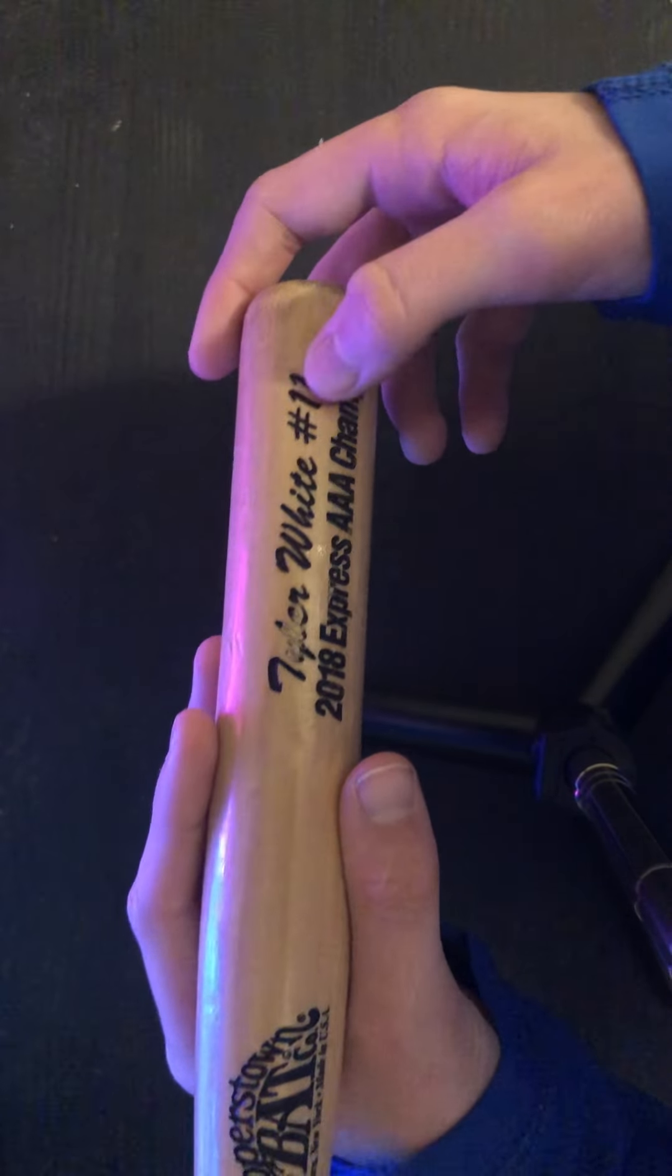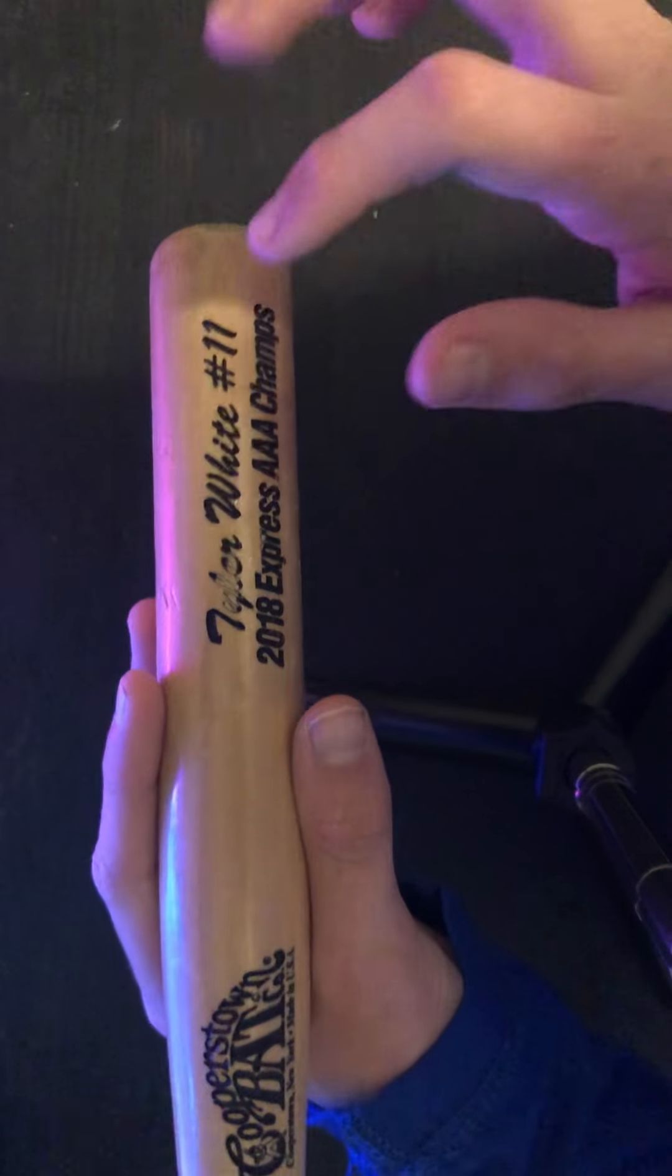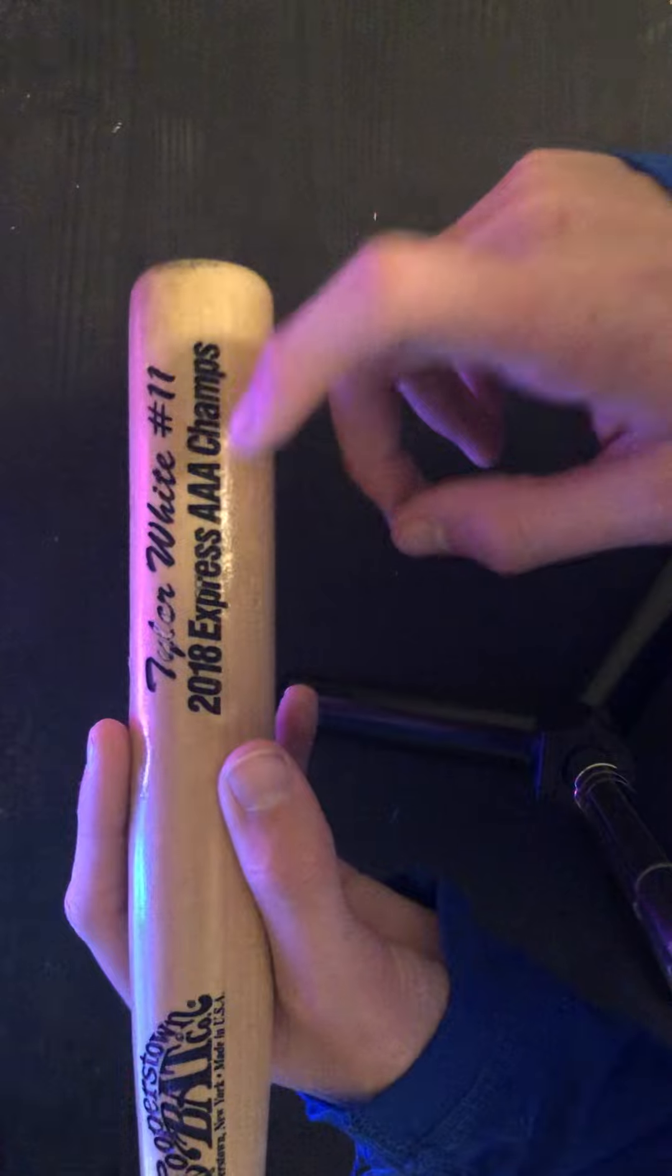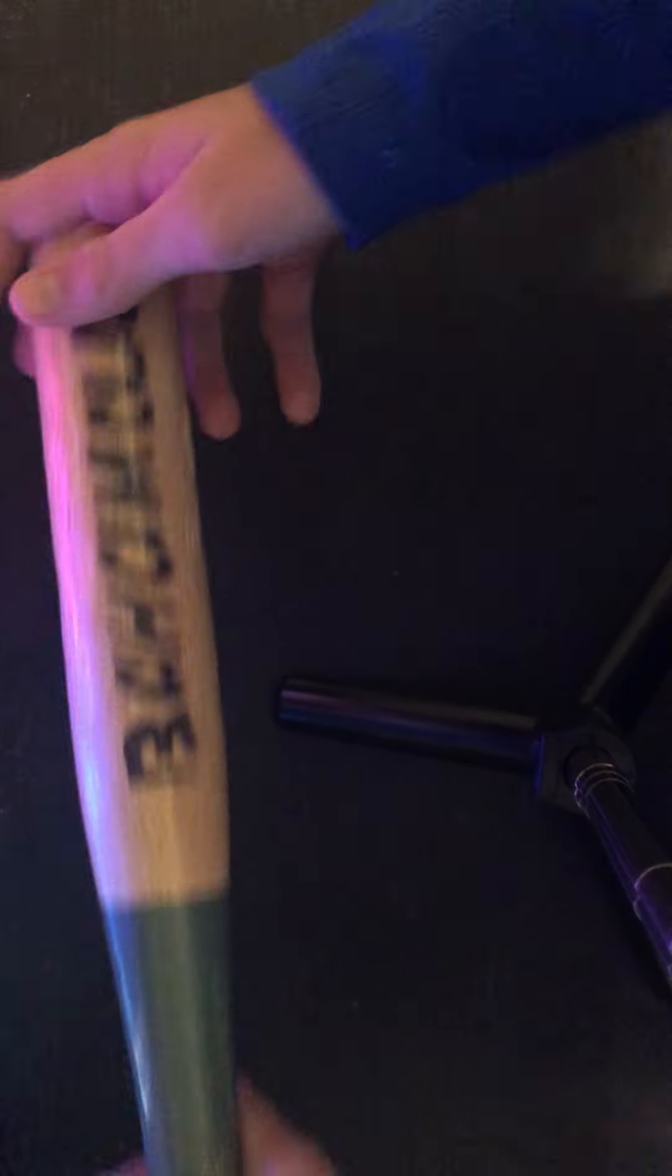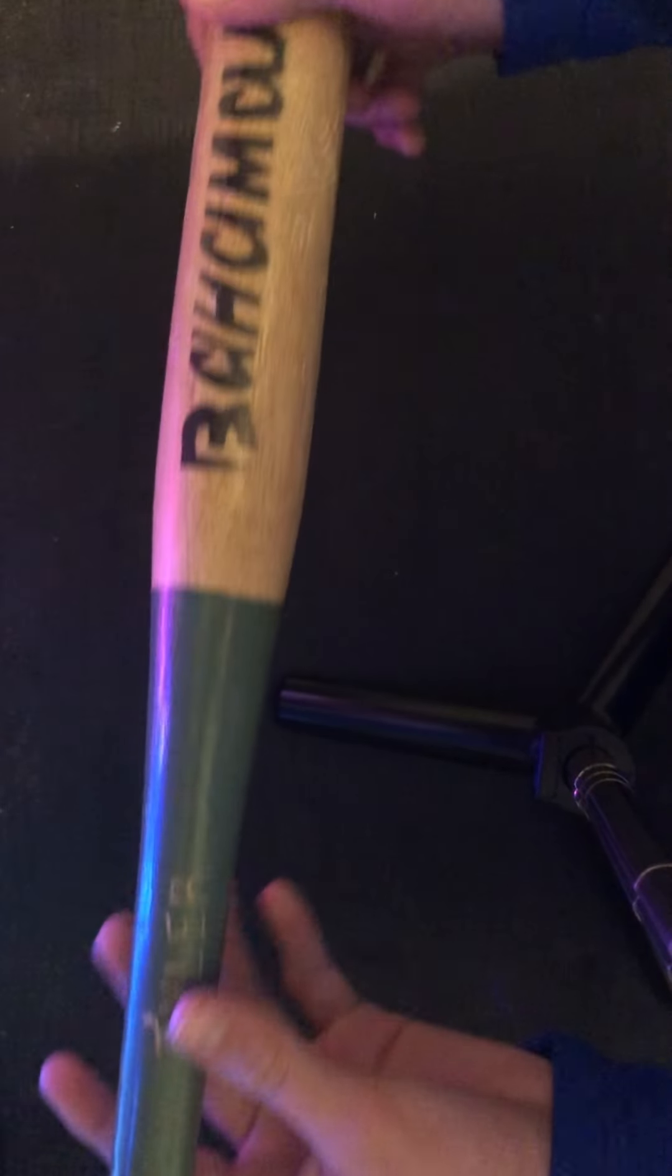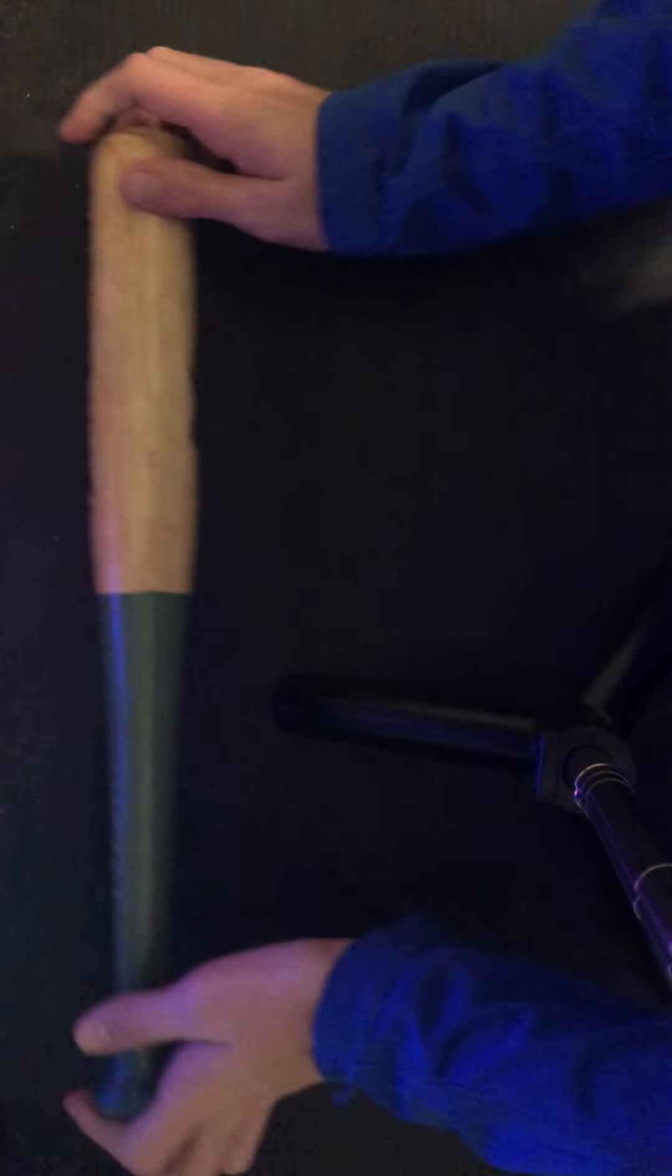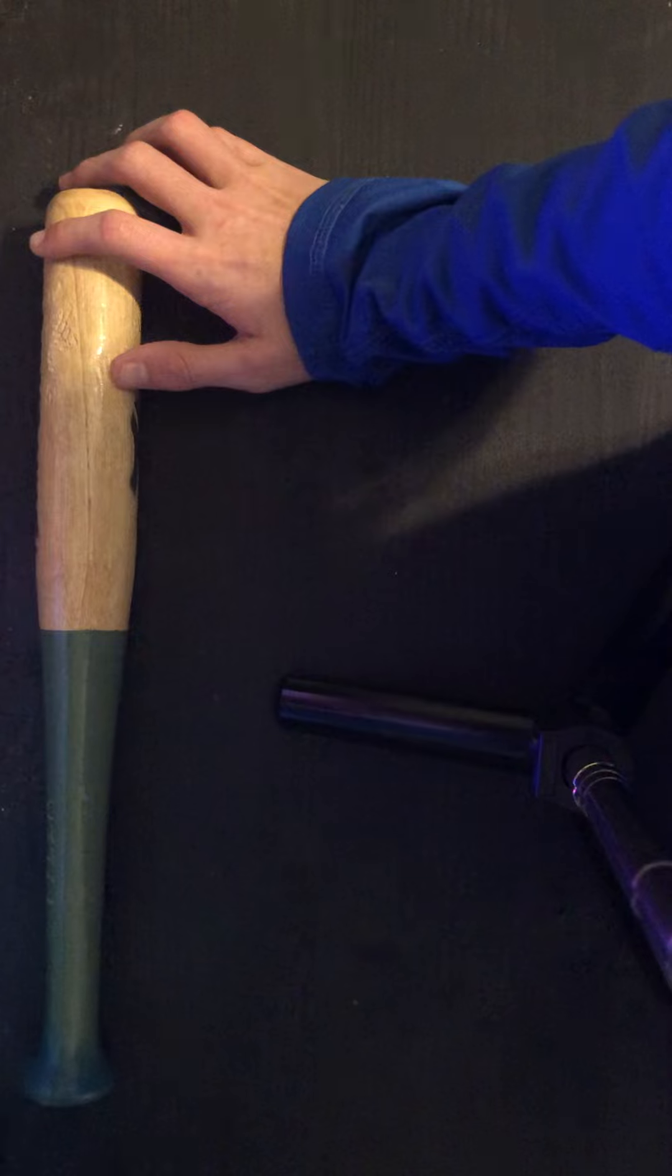Someone already had number one so I just picked 11. It was in 2018. Our team was the Express, we're the AAA champs. This one is a bat from the Bahamas with my name Tyler for the New York Yankees.